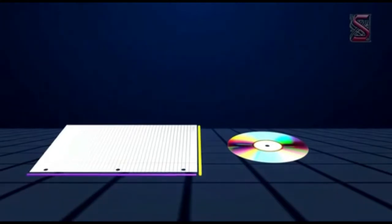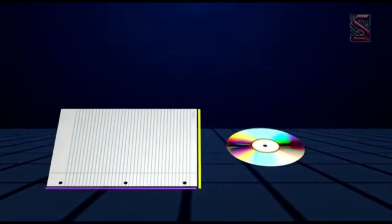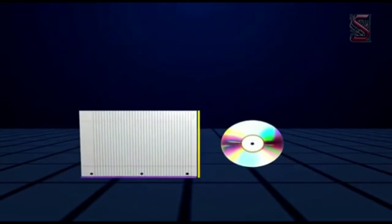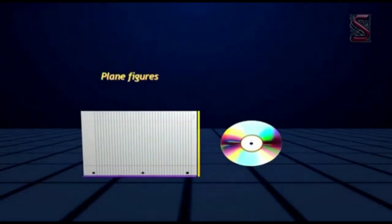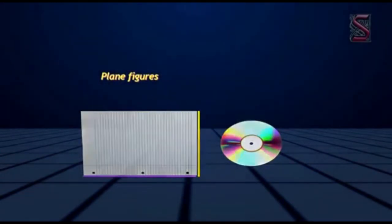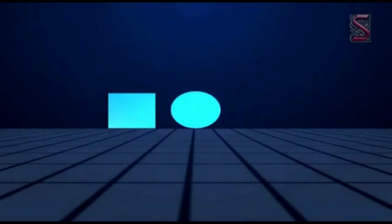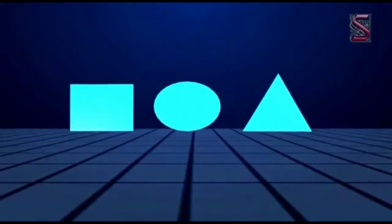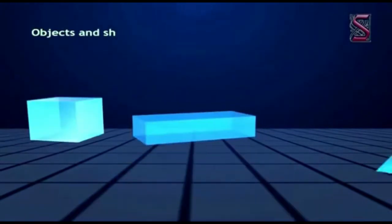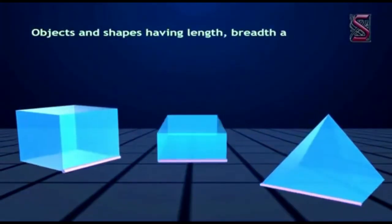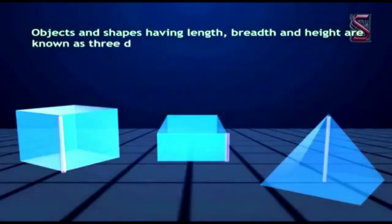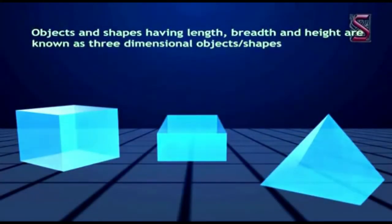Figures having some length and breadth are known as two-dimensional figures. These figures can be easily represented on a plane. That is why they're called plane figures. For example, square, circle, and triangle are two-dimensional figures. Objects and shapes having length, breadth, and height are known as three-dimensional objects and shapes. Some of the three-dimensional objects are cuboid, cube, cone, cylinder, sphere, etc.